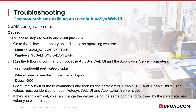Go to the CSAM SOC Adapter Bin directory on the Web UI and application server computers. Run the following command on both: CSAM Config Edit, followed by Port equals the port number (in this case 9000), and the Display option. Check the output and look for the parameters Enable SSL and Enable PMux. The values must be identical on both the Web UI and the application server. If they aren't identical, you can change the values using the same command followed by the parameter and value you want to set.